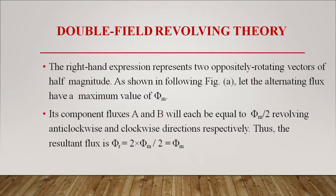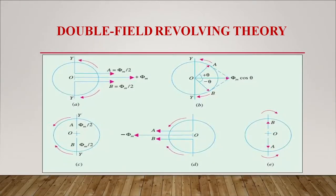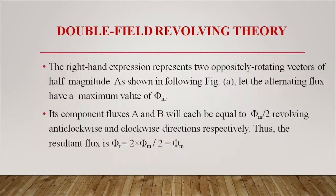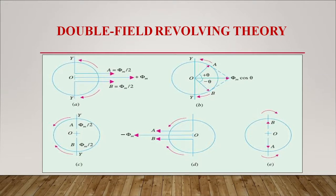As shown in the figure, when the alternating flux has a maximum value of φm, its component fluxes A and B are each equal to φm/2, revolving anticlockwise and clockwise respectively. The resultant flux φr = 2 × (φm/2) = φm. In the diagram, φm is the total flux divided into two components φm/2 each — one clockwise and one anticlockwise. When both are in the same direction, total flux is φm; when in opposite directions, flux is zero.